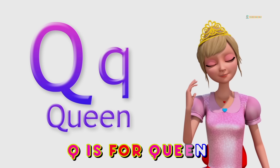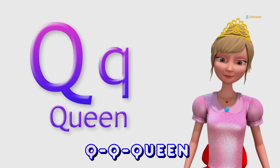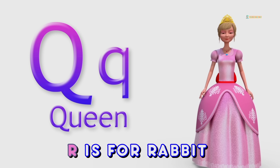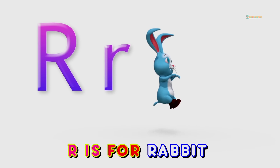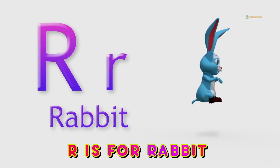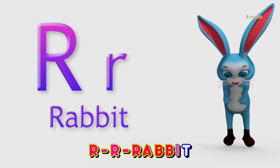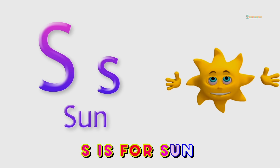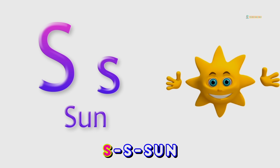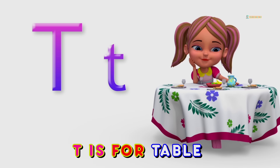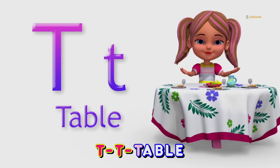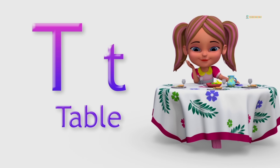Q is for queen. Qu, qu. Queen. R is for rabbit. R, r. Rabbit. S is for sun. S, s. Sun. T is for table. T, t. Table.